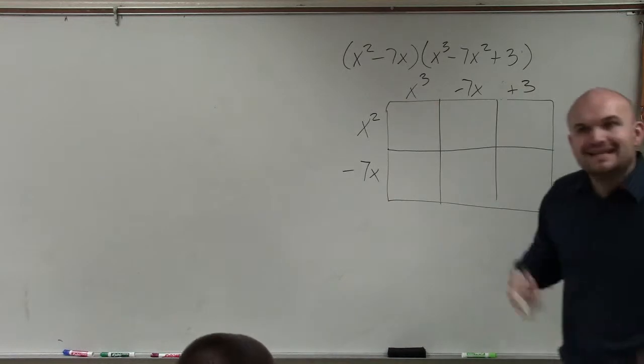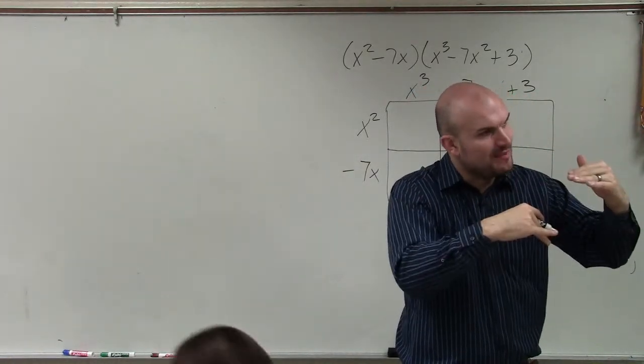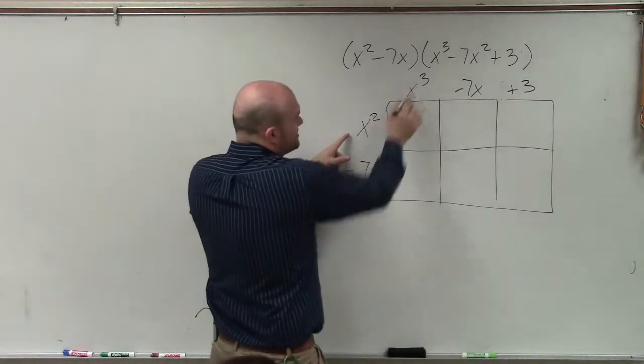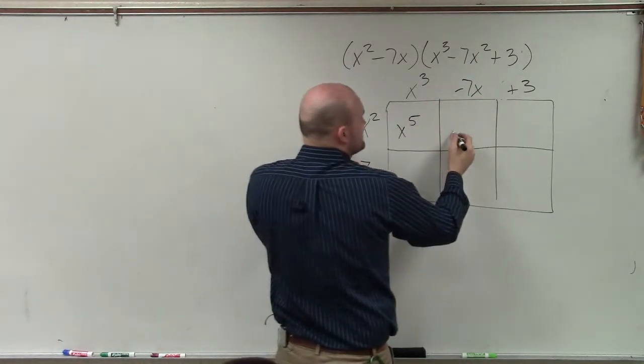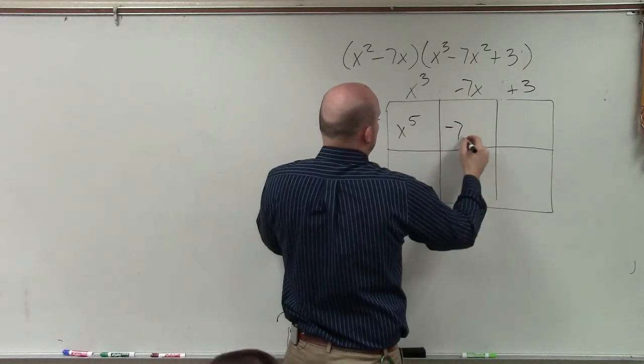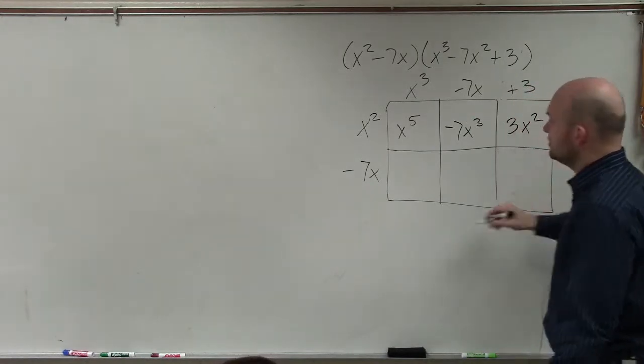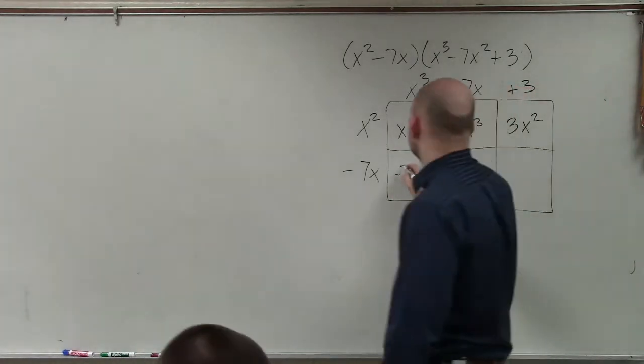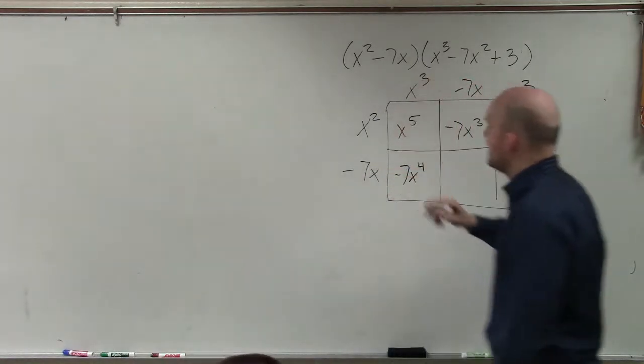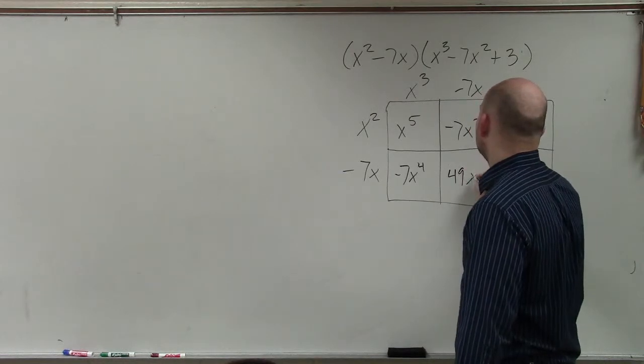Yeah, its own little section. Now, all you need to do is focus on what is the area of each box. So x squared times x cubed is x to the fifth. x squared times negative 7x is a negative 7x cubed. x squared times 3 is going to be 3x squared. Negative 7x times x cubed is a negative 7x to the fourth. Negative 7x times negative 7x is a positive 49x squared.